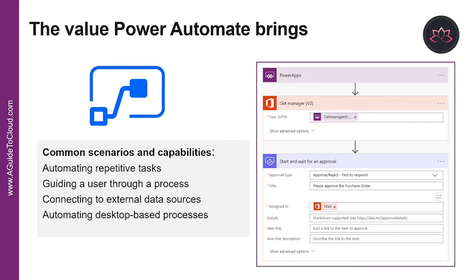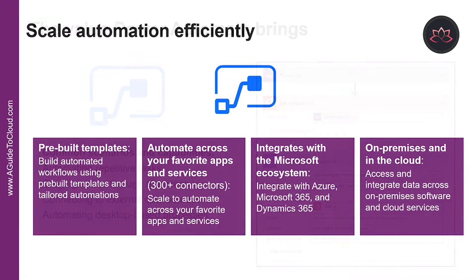Power Automate is all about having computers manage repetitive tasks. It allows anyone with knowledge of a business process to create a repeatable flow that, when triggered, leaps into action and performs the process. Some common scenarios include automating repetitive tasks like moving data from one system to another, guiding a user through a process, connecting to external data sources via connectors or APIs, or automating desktop-based processes with robotic process automation capabilities.